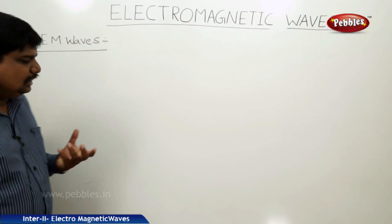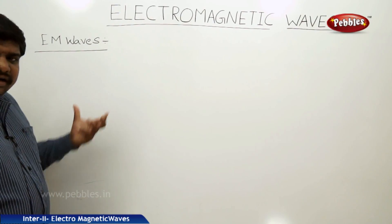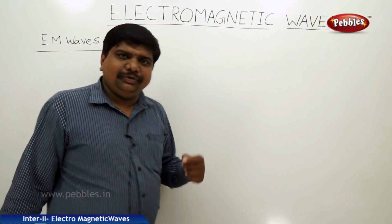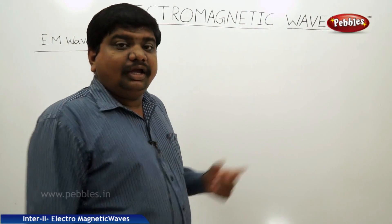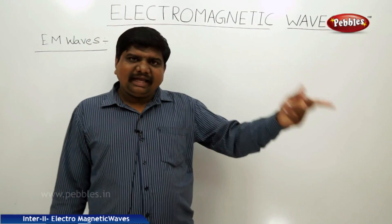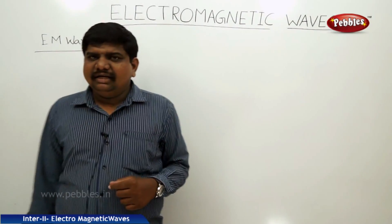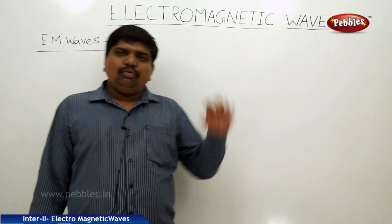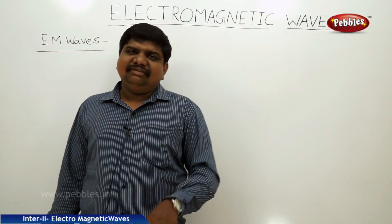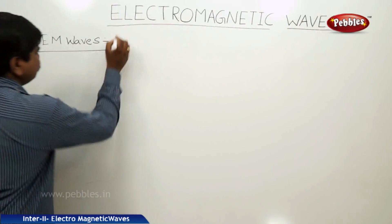Now we are discussing the propagation of EM waves. How are these waves produced? According to Maxwell's equations, a time-varying magnetic field produces an electric field, and vice versa — a time-varying electric field produces a magnetic field.